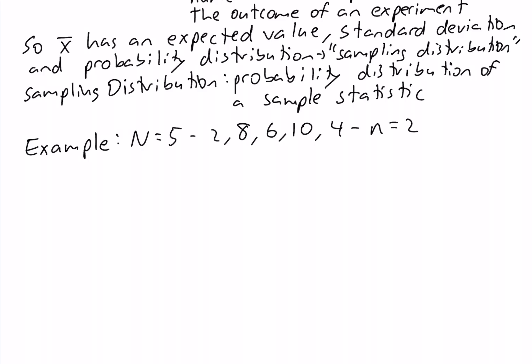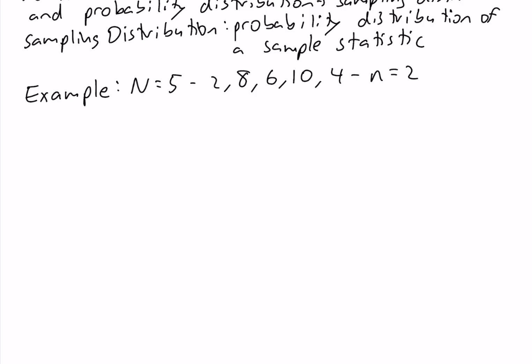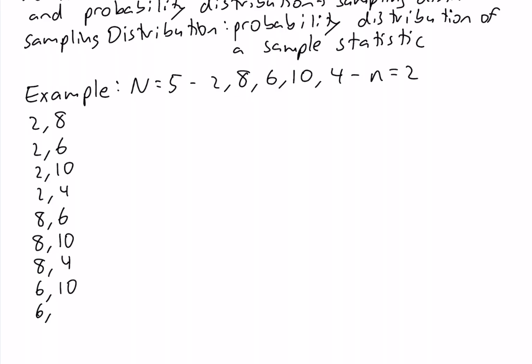One possible sample we can take from this population is 2 and 8. Another sample is 2 and 6, and so on: 2 and 10, 2 and 4, 8 and 6, 8 and 10, 8 and 4, 6 and 10, 6 and 4, and 10 and 4. So we have 10 possible samples of size 2 from this population of size 5.